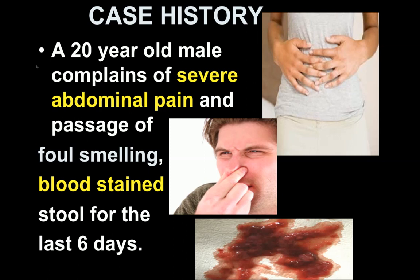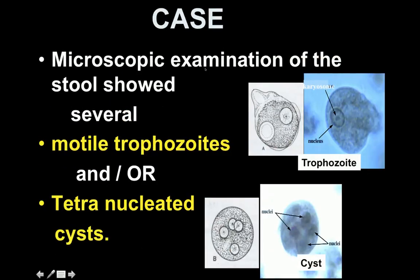Now in third year, 50% of your examination questions are case history or scenarios. Here is the type of scenario you see in your exam: a 20-year-old male complains of severe abdominal pain and passage of foul-smelling blood-stained stool for the last six days. The stool specimen received in the laboratory showed on microscopic examination several motile trophozoites and/or a few tetranucleated cysts.